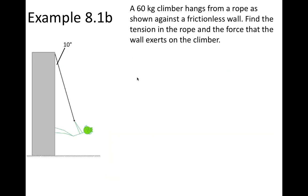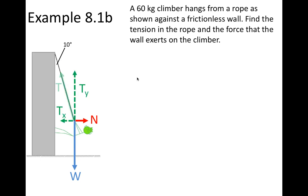Now we're going to have another similar example. Here we have a 60 kilogram climber hanging from a rope as shown against a frictionless wall. We need to find the tension in the rope and the force that the wall exerts on the climber. We start by drawing a free body diagram showing the forces acting on the climber: the weight force acting down, the normal force exerted by the wall on the climber. Remember, normal means perpendicular and normal forces are always perpendicular to the surface of contact. Here we have a vertical surface, so we have a horizontal normal force. Then we have the tension in the rope acting along the rope, and because that tension acts at an angle, we need to separate it into components.